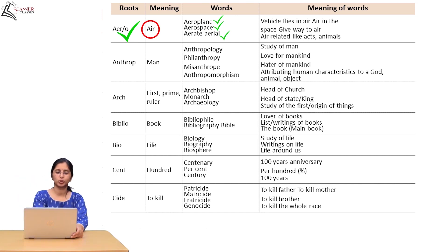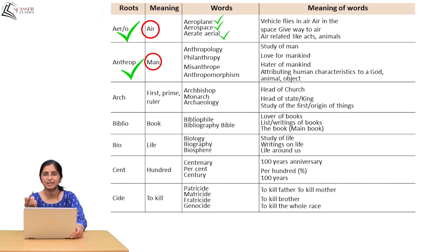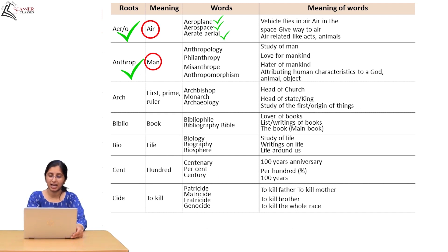Next root: 'anthrop' — meaning 'man'. If we add a prefix or suffix to 'anthrop', we get new words. Anthropology means the study of man. Philanthropy — 'phil' is added as a prefix meaning love, so philanthropy means love for mankind. If you know the root 'anthrop', you can automatically understand the meaning of words derived from it.